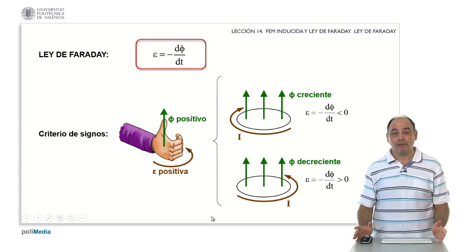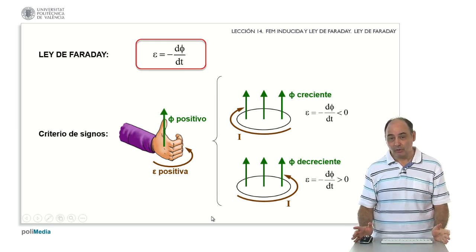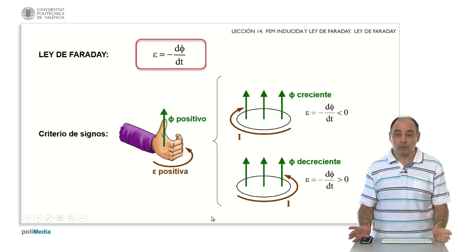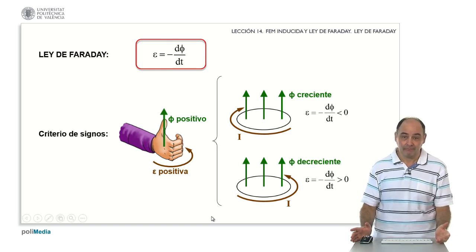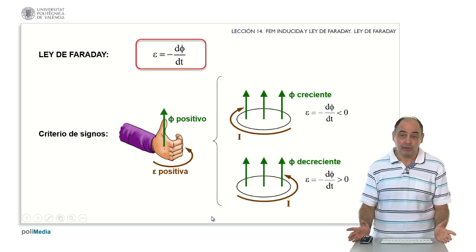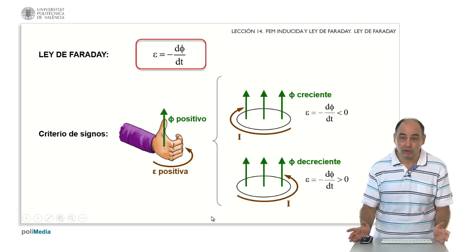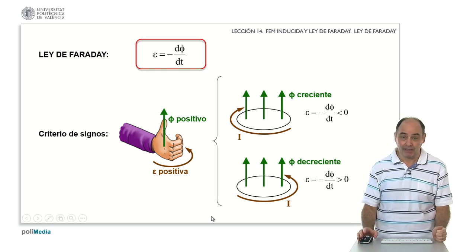Therefore, we have that the sign of the result, thanks to the minus sign that we have put in Faraday's law, reveals the direction of the current. As for how big or small it is, it depends on the electromotive force, and the faster the change, the bigger it will be. Obviously, if the flux is constant, its derivative is zero, and I have no induced electromotive force, I have no induced current — I always need variation.